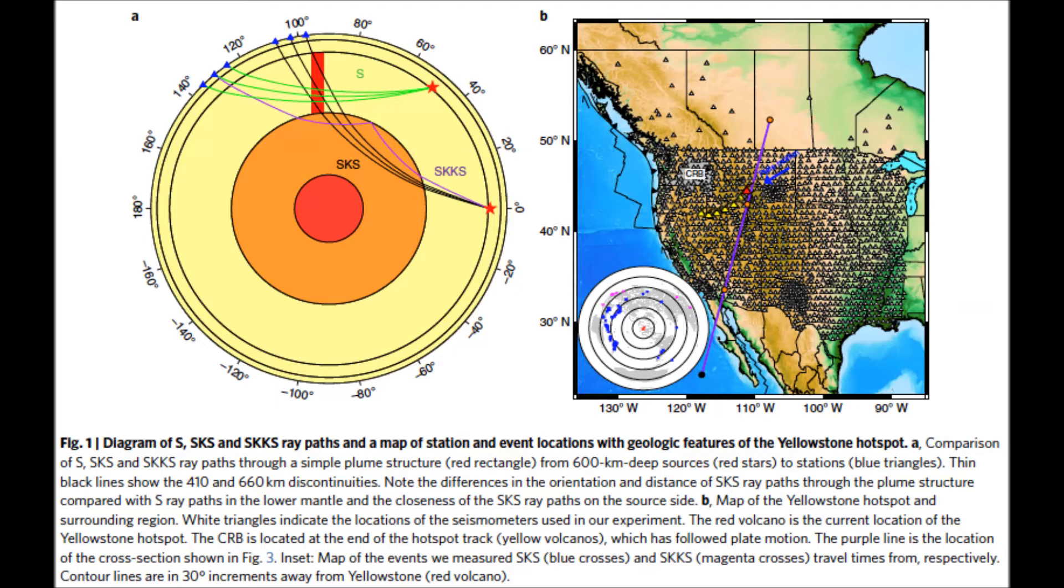Some portion of the reason this hypothesis has been so challenged with regards to Yellowstone, as per Nelson and Grand, is that Yellowstone has highlights not as per established plume hypothesis. For example, Yellowstone has in excess of one hotspot track. At that point there's the matter of the stone encompassing this plume. The Nelson and Grand paper references research from Tiffany Leonard and Lijun Liu of the University of Illinois at Urbana-Champaign, who contend that a structural plate over the Yellowstone plume restrains its movement and effect on Yellowstone.